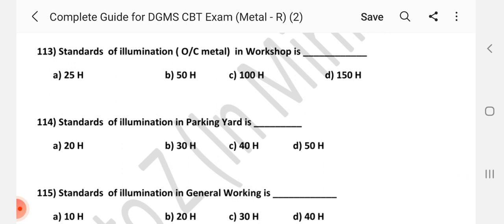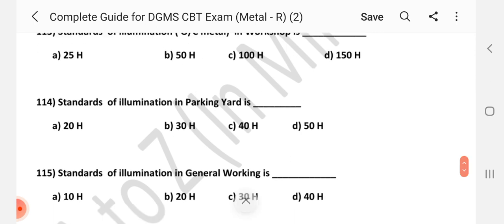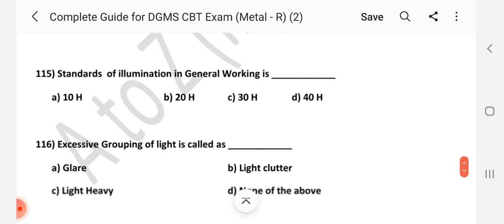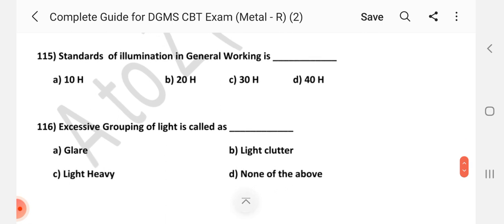Question number 112. Standards of illumination in reshelter is dash. Answer is B, 30 horizontal. Question number 113. Standards of illumination in workshop is dash. Answer is C, 100 horizontal. Question number 114. Standards of illumination in parking yard is dash. Answer is D, 50 horizontal. Question number 115. Standards of illumination in general working is dash. Answer is A, 10 horizontal.